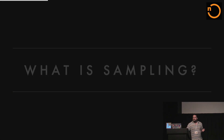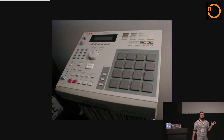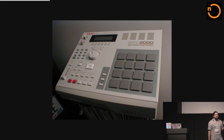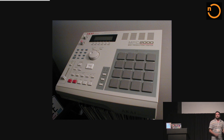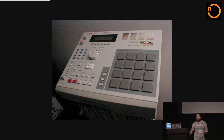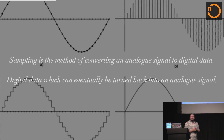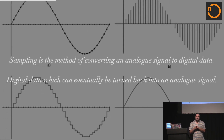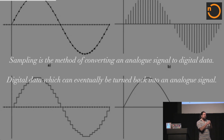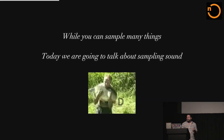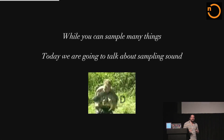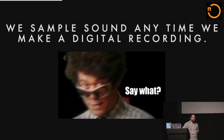We'll start with: what's sampling? You may hear sampling and think about something like an MPC — a classic controller used by many musicians making hip-hop, where you'd put a sample on each button and do some really great mashups. But we're going to take a deeper dive into sampling theory. Sampling is the method of converting an analog signal into digital data, and then taking that digital data and turning it back into an analog signal. Today we're particularly talking about sampling sound — we sample sound any time we make a digital recording.